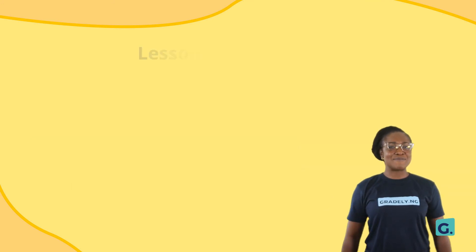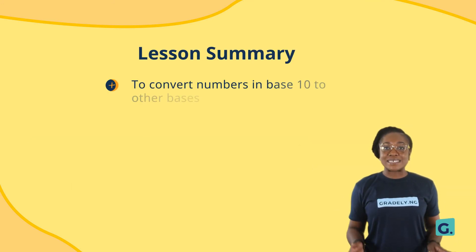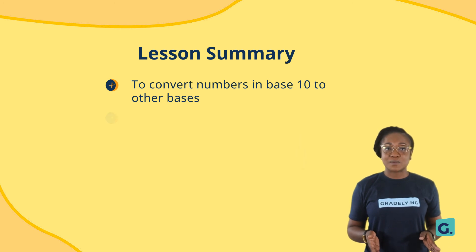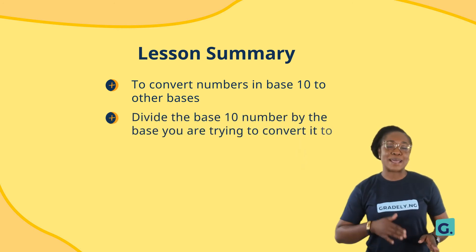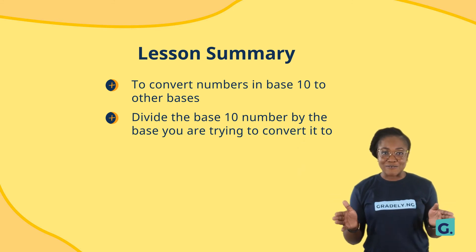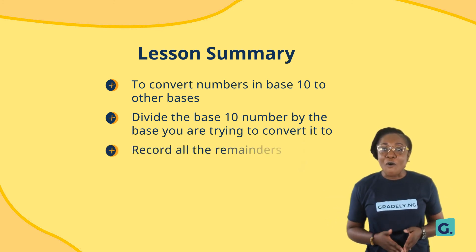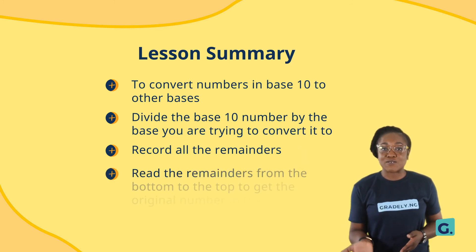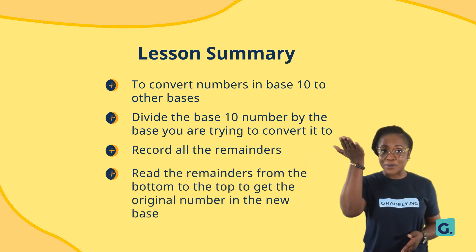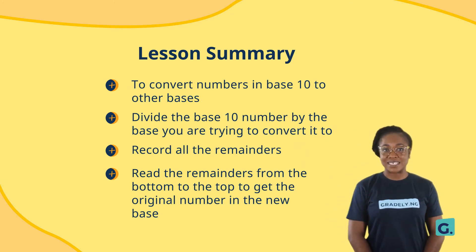Let's do a review of what we've learnt. To convert numbers in base 10 to other bases: divide the base 10 number by the base you are trying to convert it to, record all the remainders, then read the remainders from the bottom to the top to get the original number in the new base.